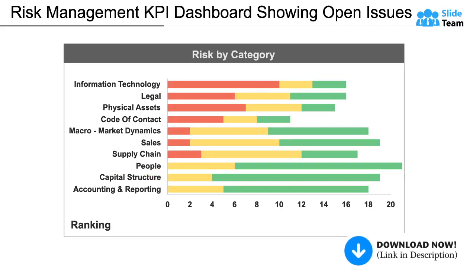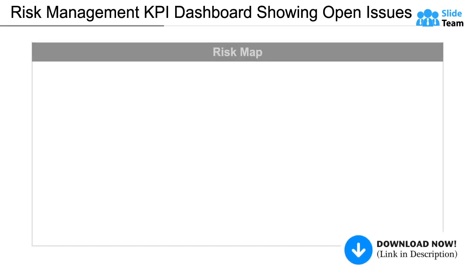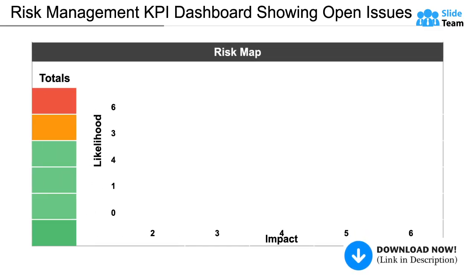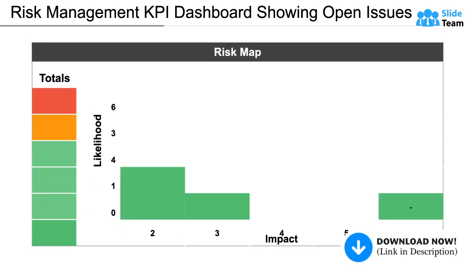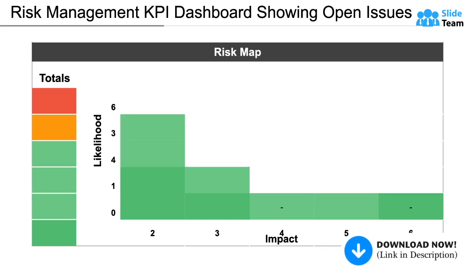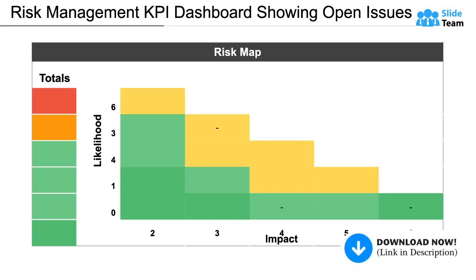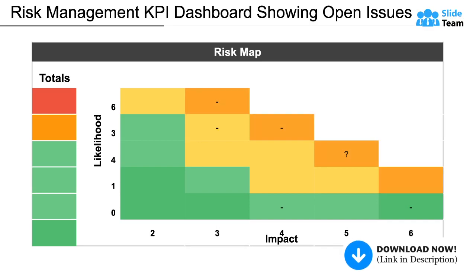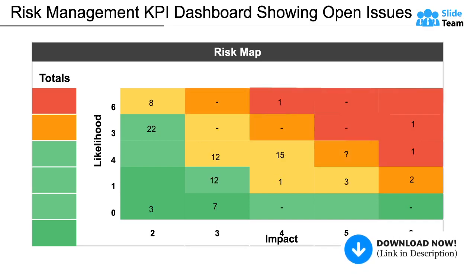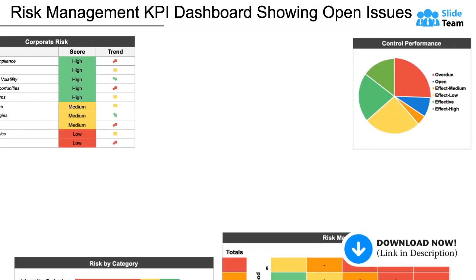A comprehensive risk management dashboard must include a risk map that depicts the risk profile, nature, impact, and appetite of the organization. All of these are critical inputs to designing a robust mitigation strategy.